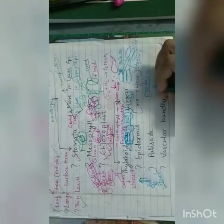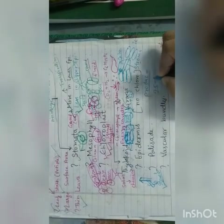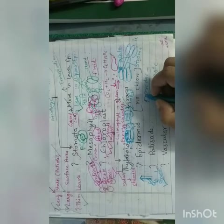If we talk about productivity of photosynthesis, the optimum temperature is 25 to 30 degrees centigrade. When productivity is high, there will be good availability of water and the temperature is optimal.